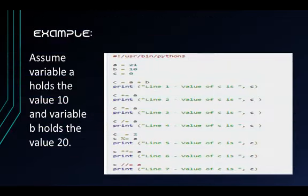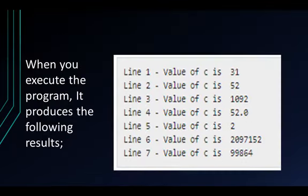Now for an example, let's assume that variable A holds the value 10 and variable B holds the value 20. Using the assignment operators, we will get the value of C. When you execute the program, it produces the following results.